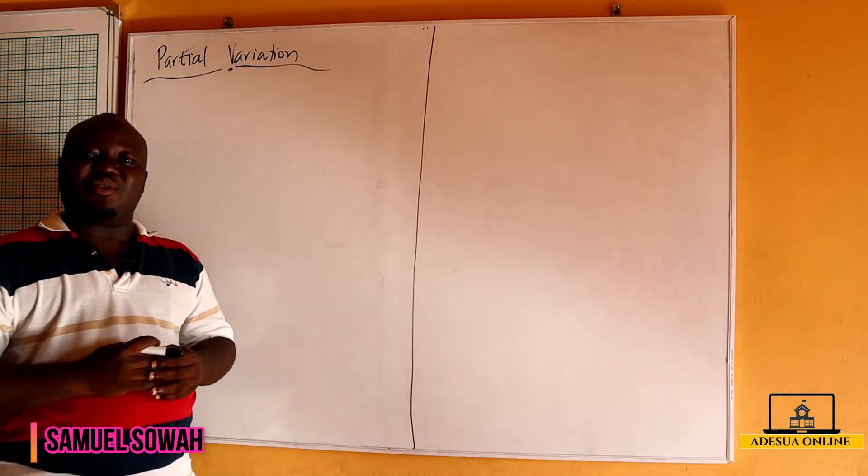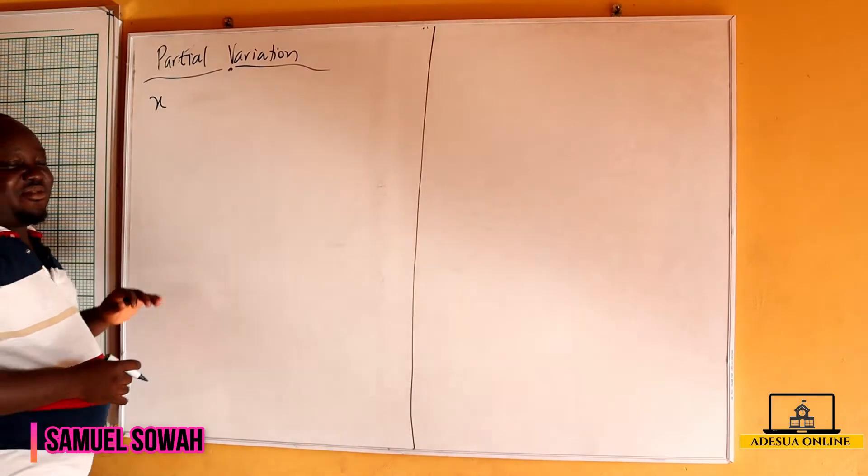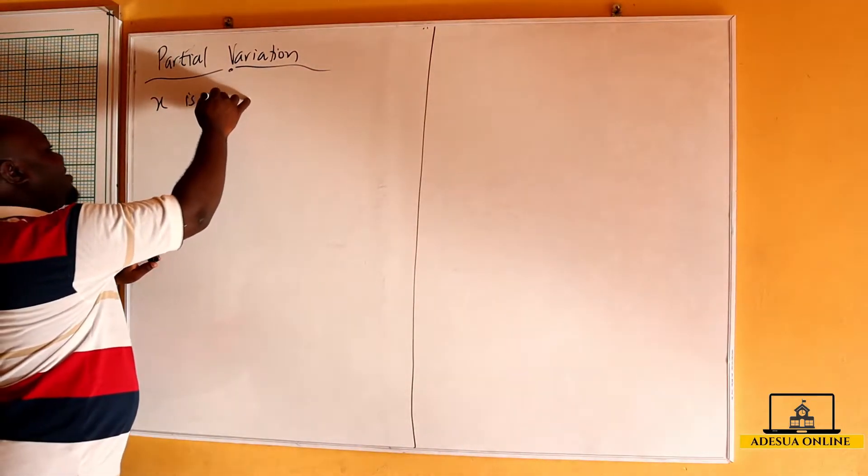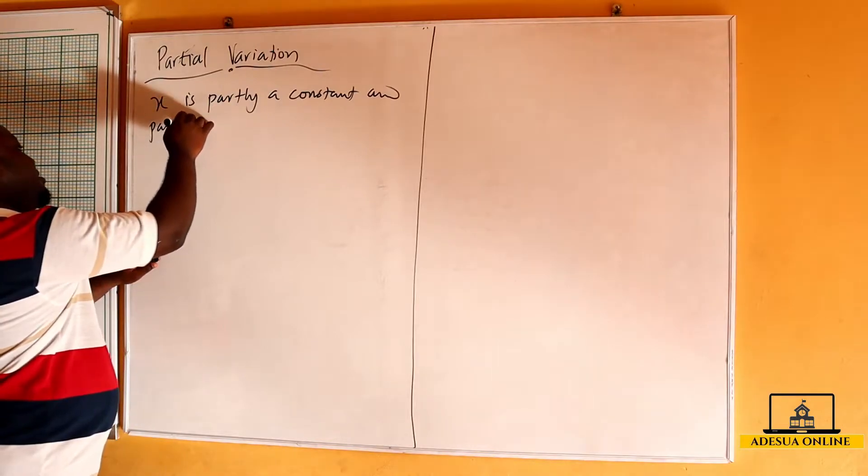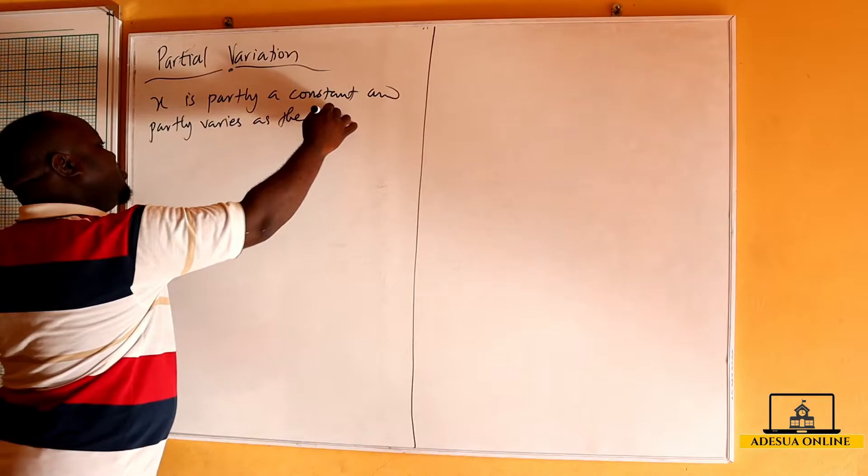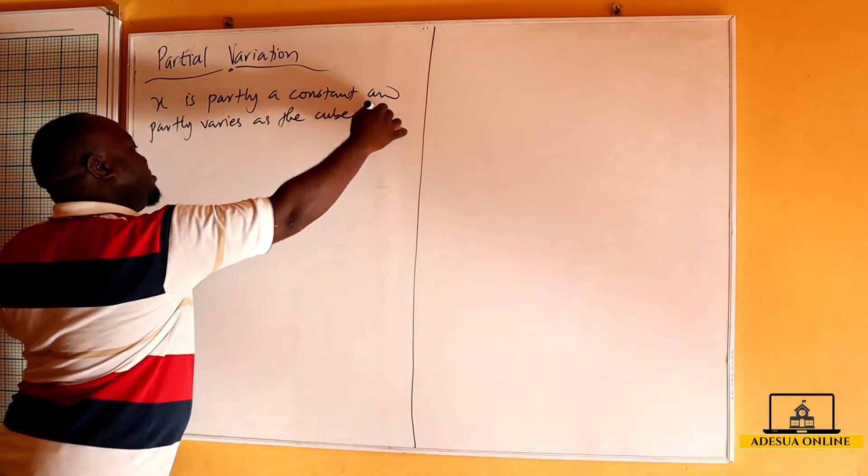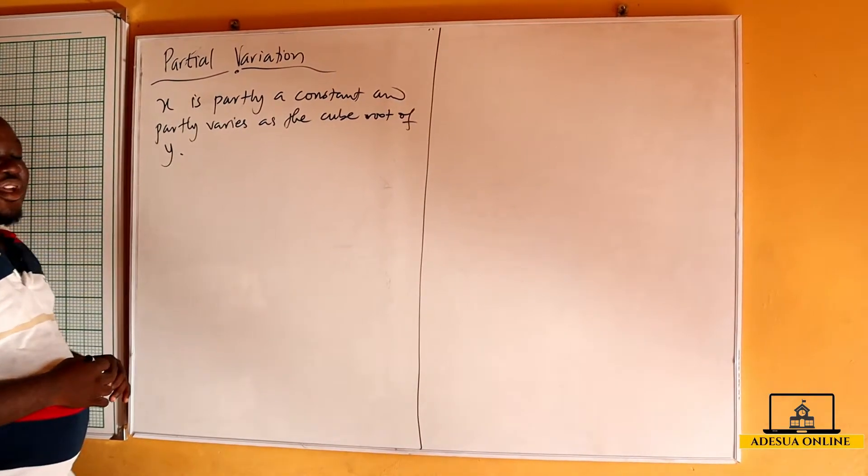Hello students, we are going to continue the lesson by doing partial variation. If I should have x is partly a constant and partly varies as the cube root of y.